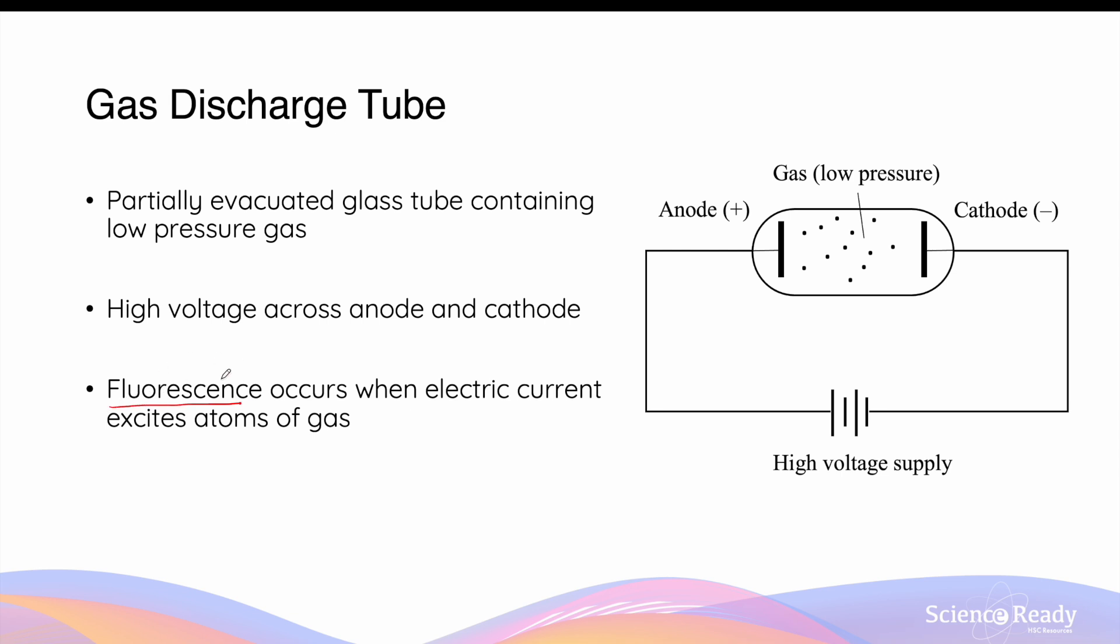Gas discharge tubes cause fluorescence, which is the emission of light due to spectroscopy when the energy from electric current excites the electrons in the atom of gas. When these excited electrons return to the ground state in the atoms, they will produce energy in the form of visible light, and that is what we call fluorescence.